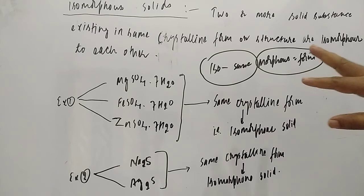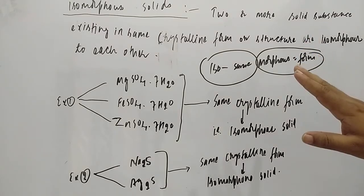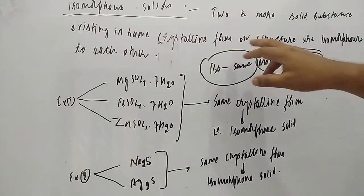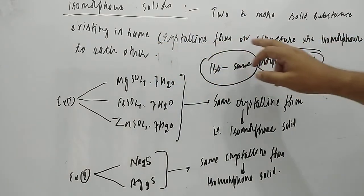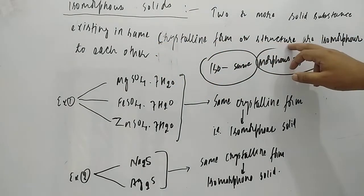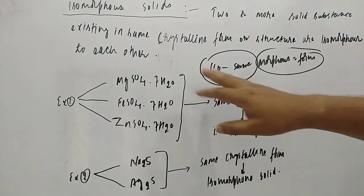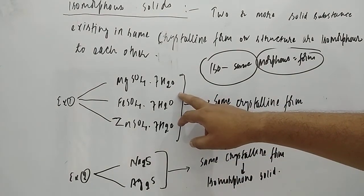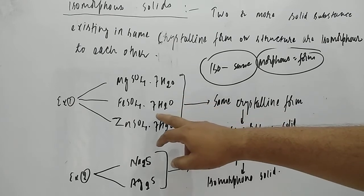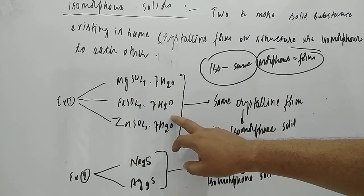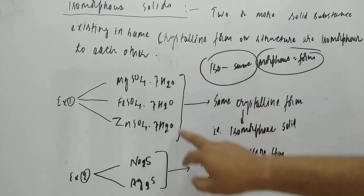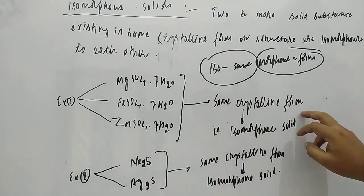So, two or more than two solids having the same structure or same crystalline form are known as isomorphous solids. For example, magnesium sulfate heptahydrate (MgSO₄·7H₂O) and ferrous sulfate heptahydrate (FeSO₄·7H₂O) and zinc sulfate heptahydrate (ZnSO₄·7H₂O).